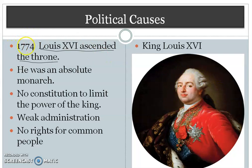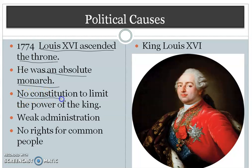But this king was not a good administrator. He was an absolute monarch. Absolute monarch means he did whatever he liked, and there was no control on him — meaning there was no constitution to limit the power of the king.